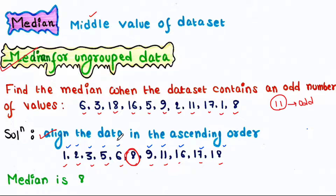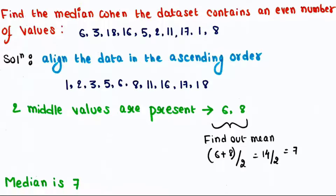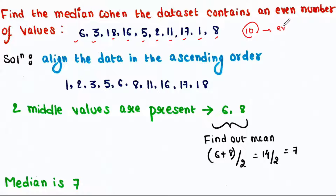Next, find the median when the data set contains an even number of values: 6, 3, 18, 16, 5, 2, 11, 17, 1, and 8. Here we have a total of 10 values, which is an even number. Again, align the data in ascending or descending order — I am aligning them in ascending order.